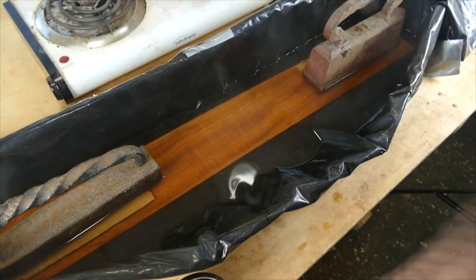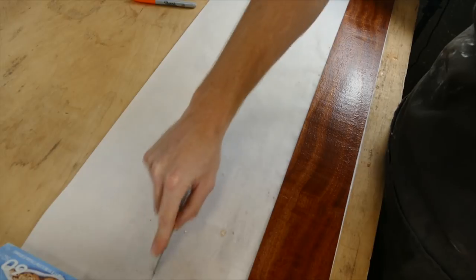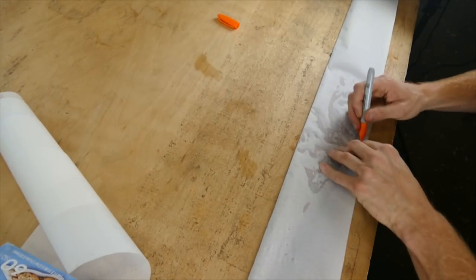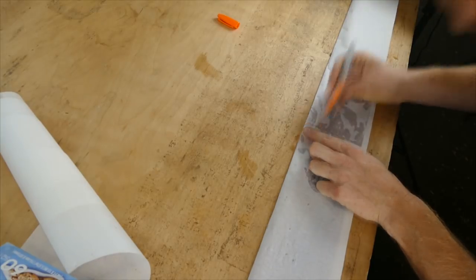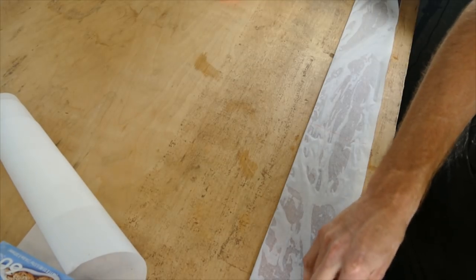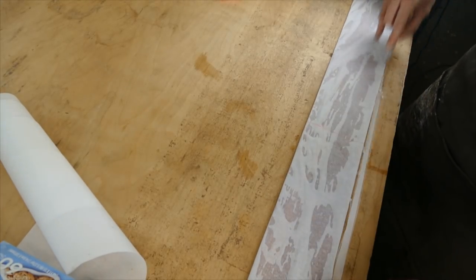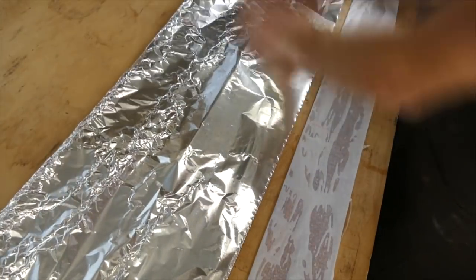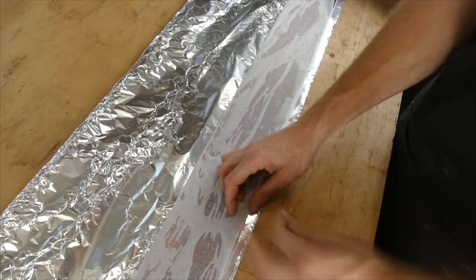Then I wrap the side first in parchment paper, and notice how I transfer the mark for the waist onto the parchment paper. Then I wrap the side in aluminum foil. Again, I keep track of that waist mark and transfer it onto the aluminum foil.